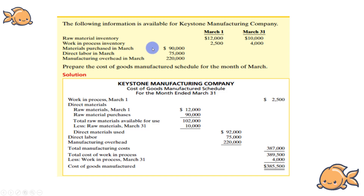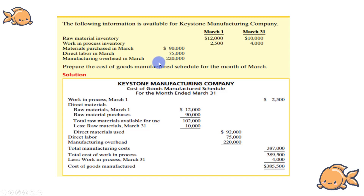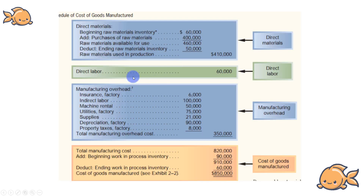We also need to find the material used in March. Then we have Direct Labour in March. Finally, Manufacturing Overhead in March is given — 2,200,000 — and another overhead figure of 3,200,000.